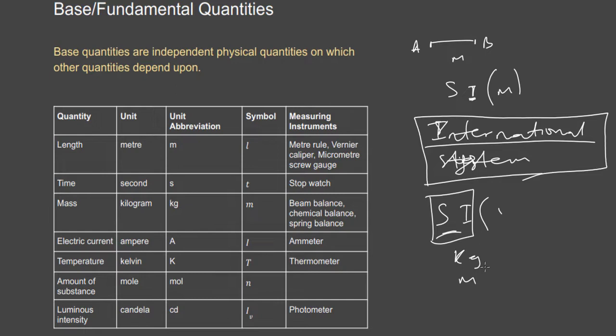The fourth base quantity is electric current, whose unit is the ampere (A). The fifth is temperature, the sixth is amount of substance — which we call the mole — and the last is luminous intensity. These are the SI base units on which every other unit can be derived.